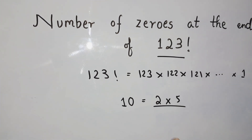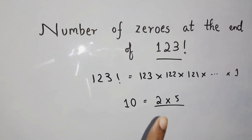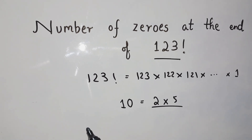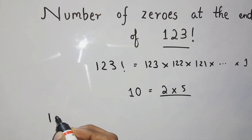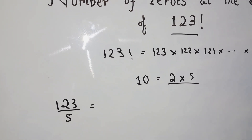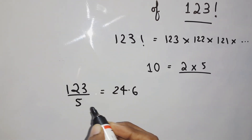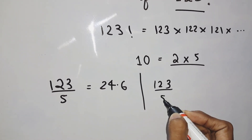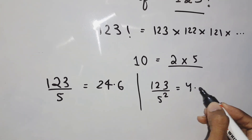First of all, we'll find out the pairs of 2 and 5 in this factorial, which will tell us how many trailing zeros there are. We divide by higher powers of 5: 123 ÷ 5 = 24.6, then 123 ÷ 5² = 4.92.